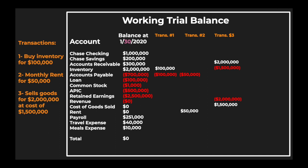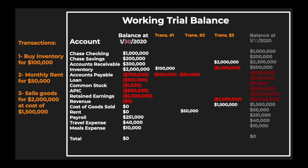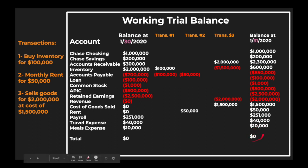Now that you've recorded your three transactions, you're ready to look at the adjusted trial balance as of January 31, 2020. You take the beginning balance as of January 30th, add in all of these transactions, and arrive at the ending balance for each GL code. These will sum to zero, indicating your debits equal your credits, and you now have a month-end trial balance which you can use to generate your financial statements.